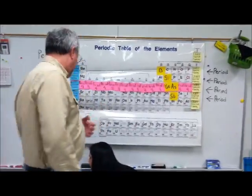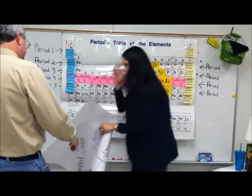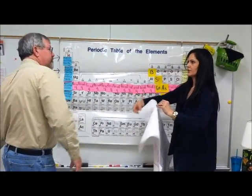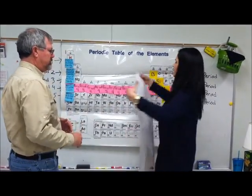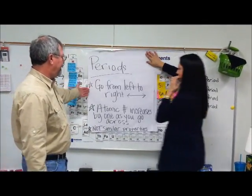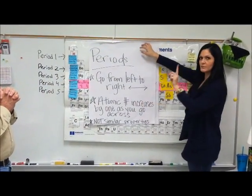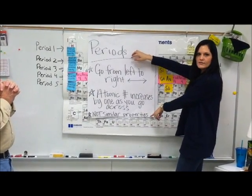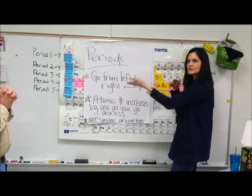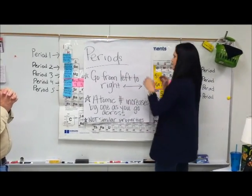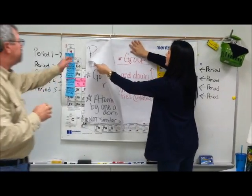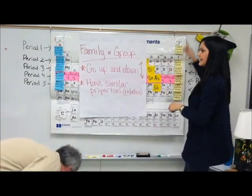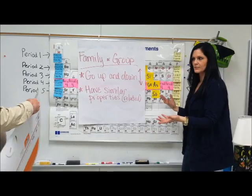So just to recap: a couple of things you need to remember about the periodic table. Periods go side to side — left to right — and the atomic number increases by one as you go across, like 38, 39, 40. These do not have similar properties; they are just in a line because the atomic number increases by one every time. Groups and families go up and down, and these will have similar properties — they will react in similar ways.